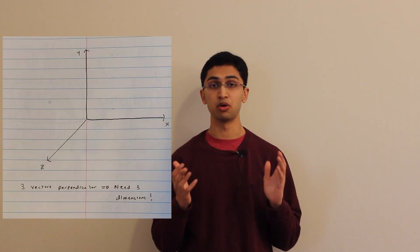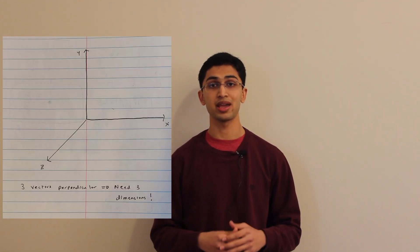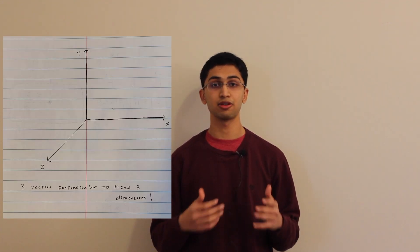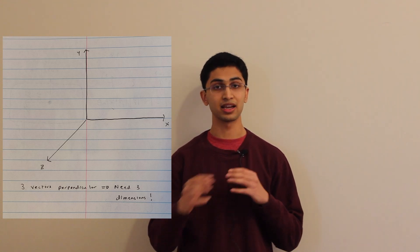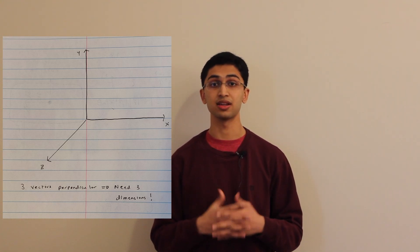It often happens that we need to multiply two vectors to get a third product vector that is perpendicular to the first two. The only way to do this is to go into a three-dimensional space and add an extra third dimension. Because if you have two vectors sitting in one plane, the only way to get a third vector perpendicular to the first two is to add an extra dimension for that third vector to sit in.